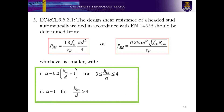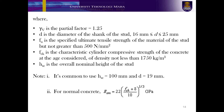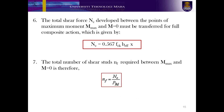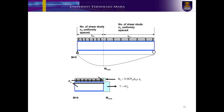EC4 clause 6.6.3.1 provides guidelines on the design shear resistance of a headed stud automatically welded in accordance with EN 14555. The shear resistance of the headed stud should be determined as shown in the figure, while the value of alpha is defined as shown in the green box. The definition of the given parameters for calculating the design shear resistance of the headed stud is given here. The total shear force NC developed between the points of maximum moment Mmax and M equals 0 must be transferred for full composite action, which is given by NC. The total number of shear studs NF required between Mmax and M equals 0 is given by NF. The figure shows the arrangement of the total number of shear studs NF required between Mmax and M equals 0.